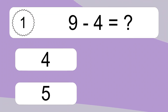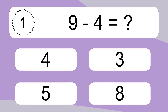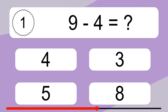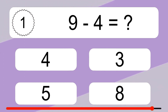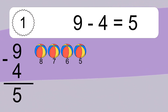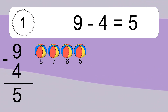9 minus 4 equals what? 9 minus 4 equals 5. Let's count it. 8, 7, 6, 5.